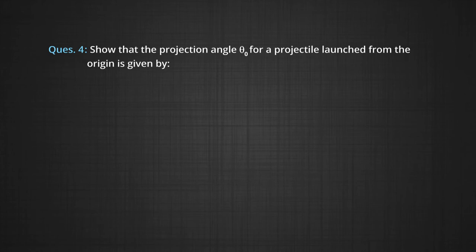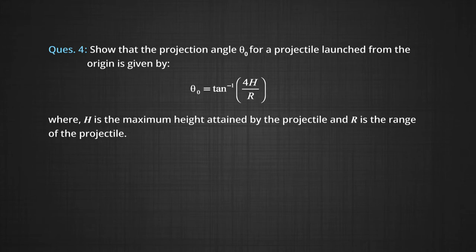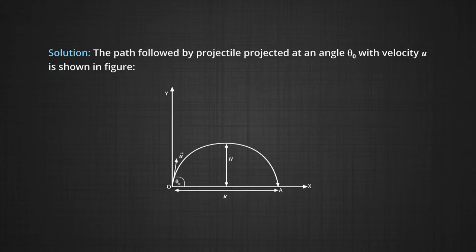Question 4: Show that the projection angle θ₀ for a projectile launched from the origin is given by θ₀ = tan⁻¹(4h/R), where h is the maximum height attained by the projectile and R is the maximum range. In the diagram, OA is the range of the projectile, h is the height, θ₀ is the angle of projection, and u is the velocity.